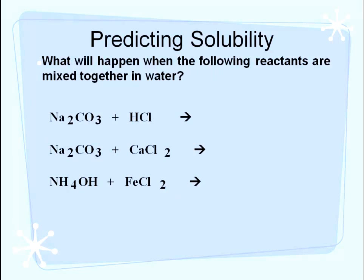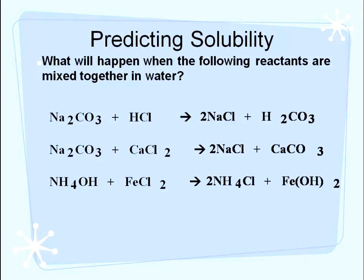Pause the video, go through and predict your products, balance your equations, and based on your solubility rules determine if any products will be solids. Welcome back. We have three equations here, and in each of these equations there will be a solid product. Separate your ions on the reactant side and rearrange them to get your products. Using solubility guidelines, H₂CO₃ is insoluble, calcium carbonate is insoluble, and so is iron 2 hydroxide. These will all be in solid form when you mix the aqueous solutions together.